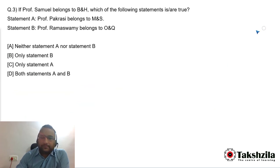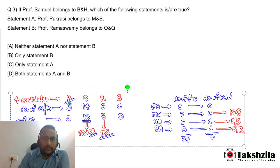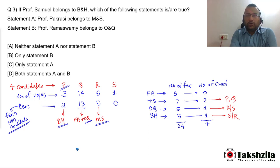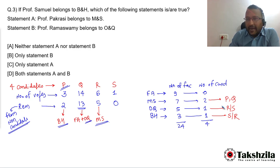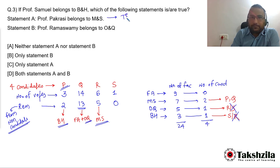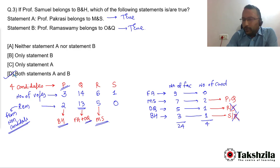Question 3: If Professor S belongs to department B&H, then Professor R belongs to department O&Q. The first statement — Professor P is from department M&S — is true. The second statement — Professor R belongs to department O&Q — is also true. So both statements are true.